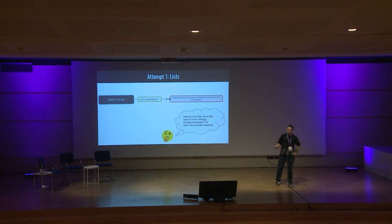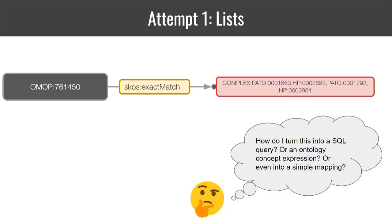The first initial thing you could think of is: can we just provide a list in our identifier by concatenating all the components of the complex term one after the other? Now we've added at least all of the components of our mapping into some kind of string representation.